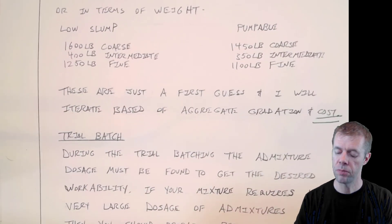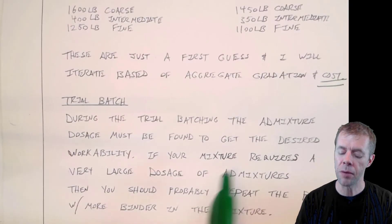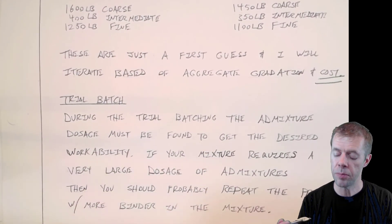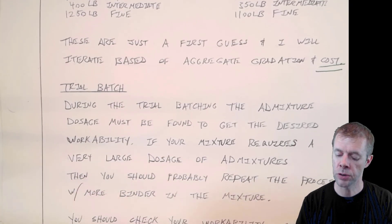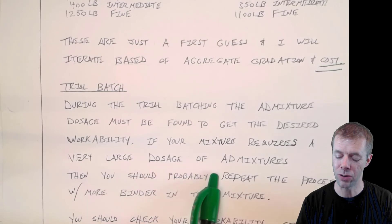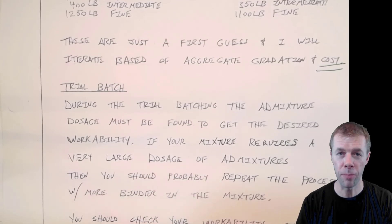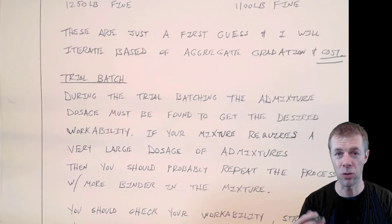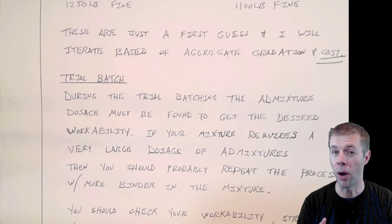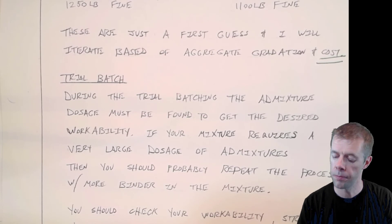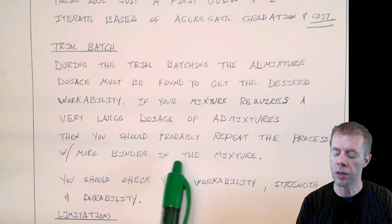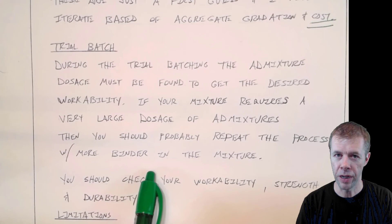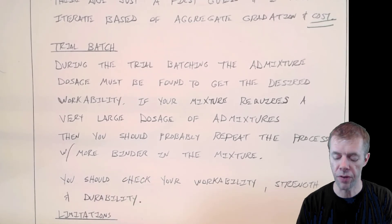And then I'm going to trial batch. And during the trial batching, the admixture dosage is going to be adjusted. It's going to be tweaked with to find the desired workability. And if your mixture requires really large doses of admixtures, then you should probably repeat the process. That means one of the assumptions that we made earlier about good aggregates is probably not right. Or something else is actually causing trouble. But you would go over this whole process again with more binder in the mixture. And again, go through the process after that.